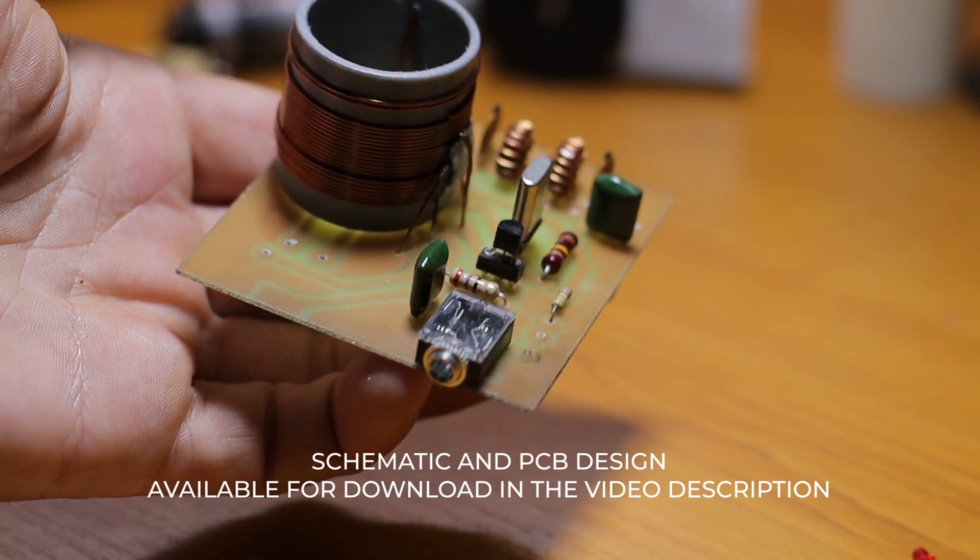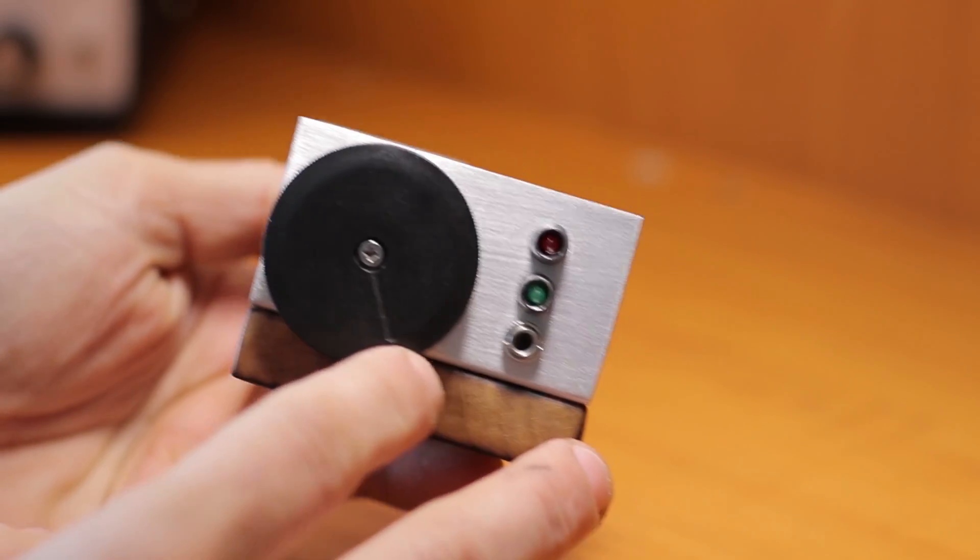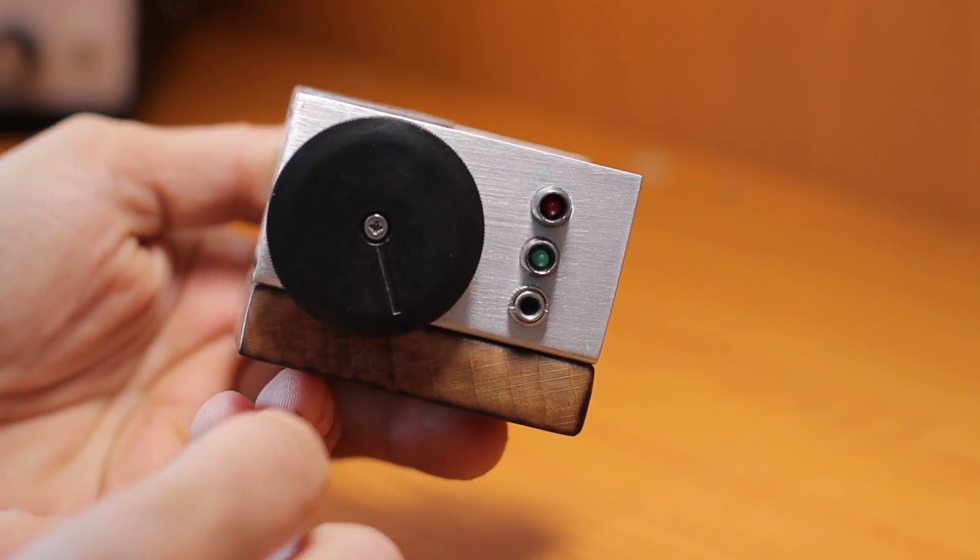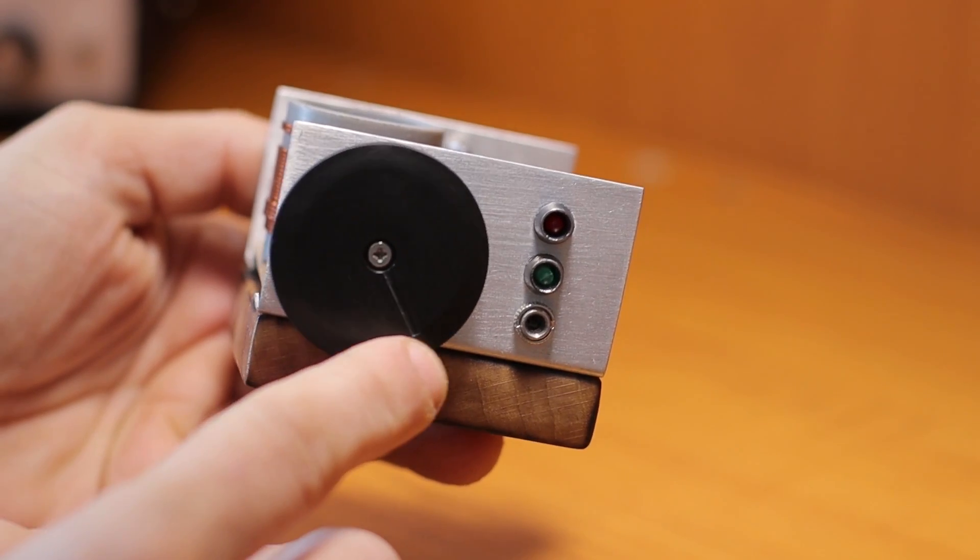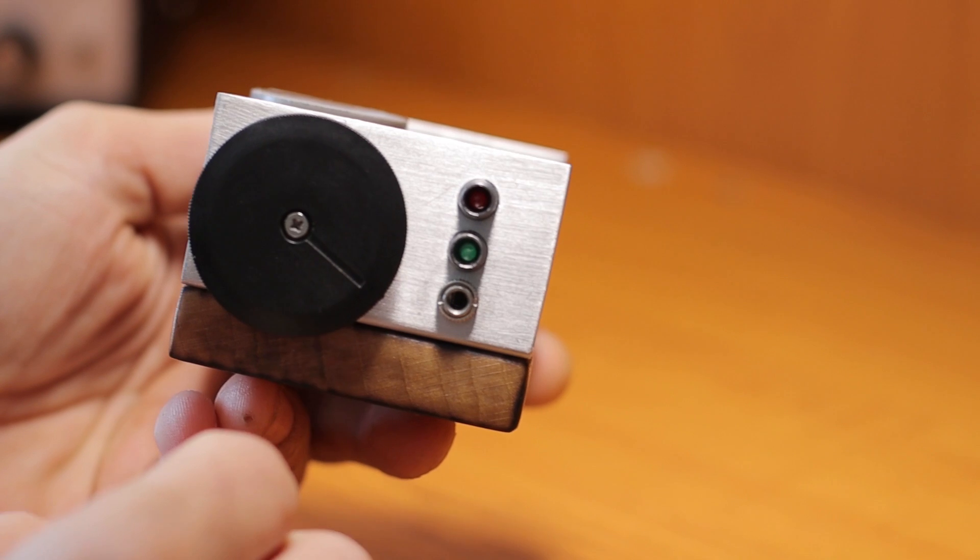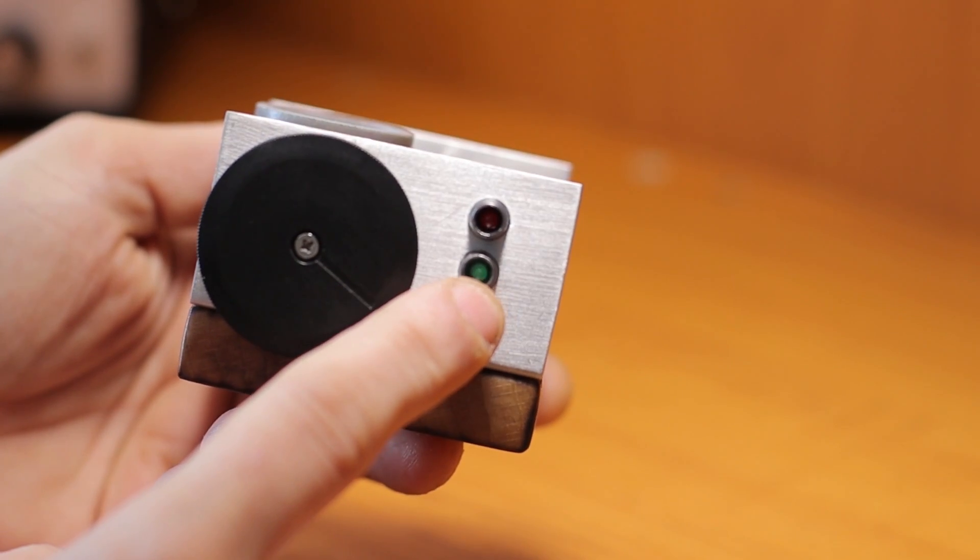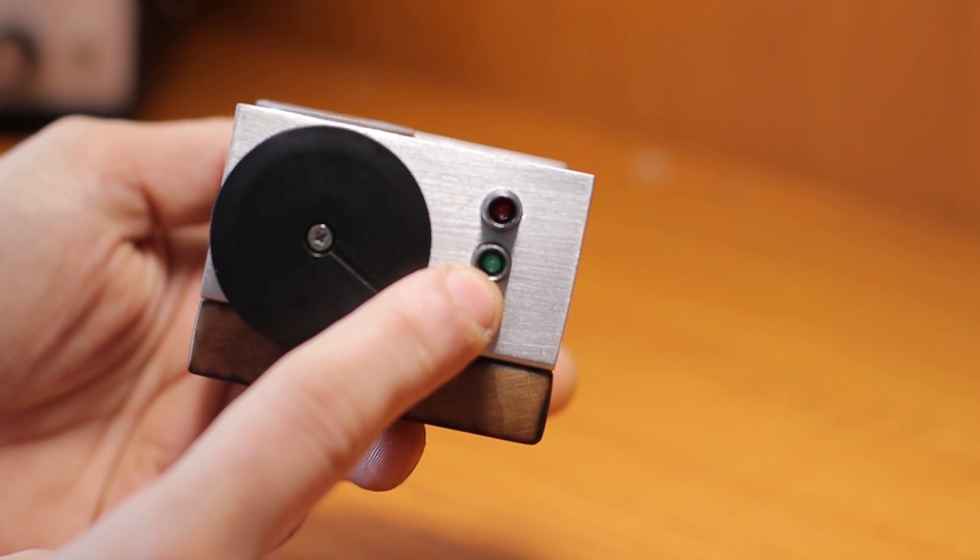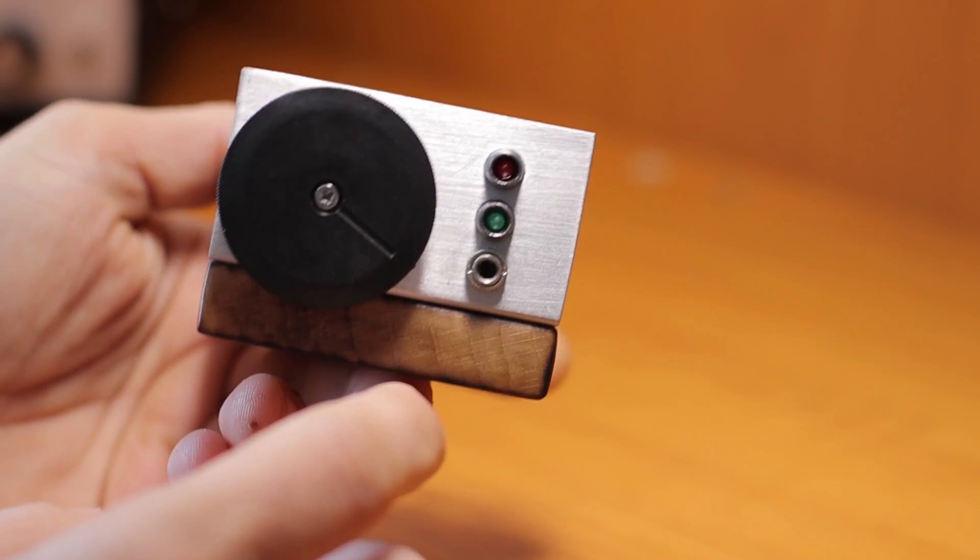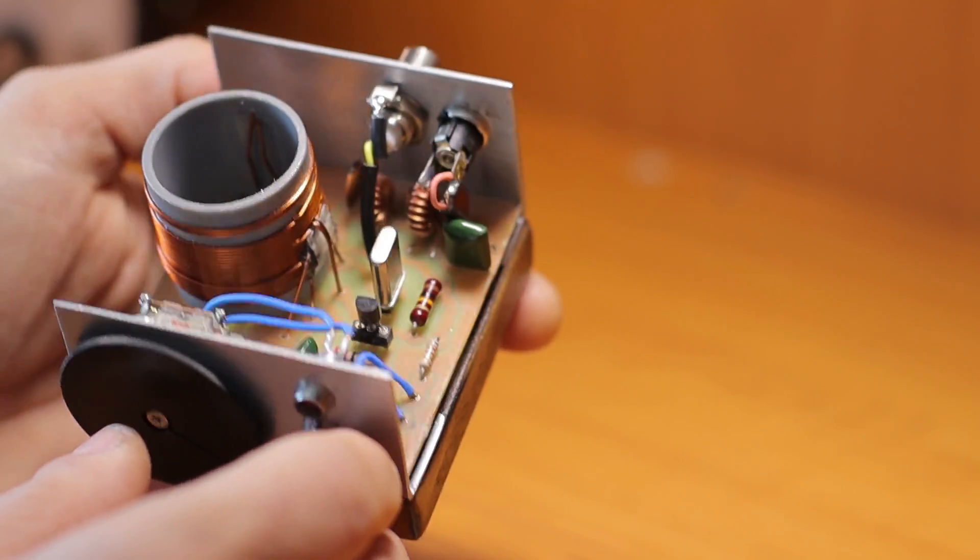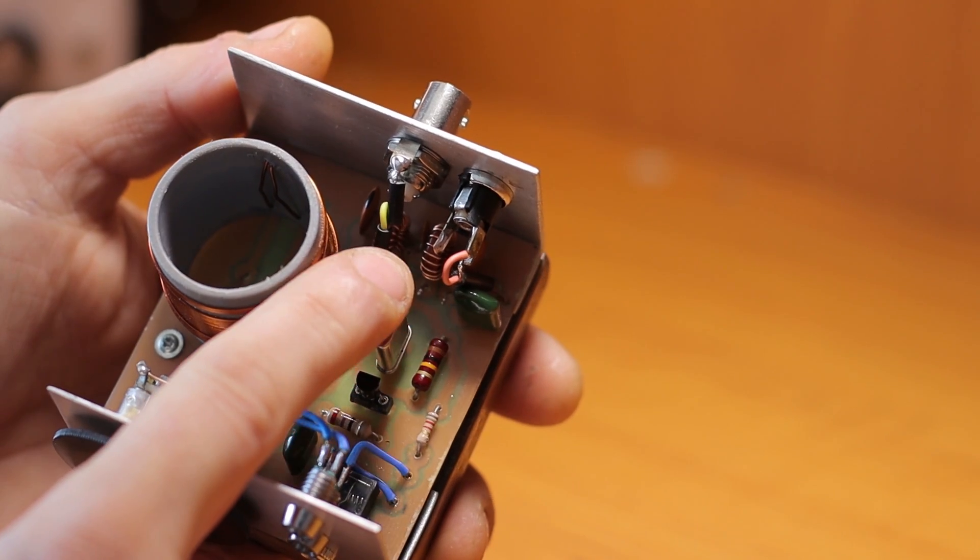I tried sticking to the original schematic. Here we have the variable capacitor that will help me adjust the transmitter. Here I have the input for the key, a green LED that will show me that it's powered on, a red LED that will light up every time I'm transmitting, and pretty much that's all the modifications that I did to the original design.